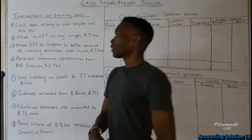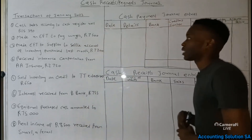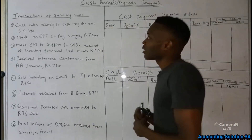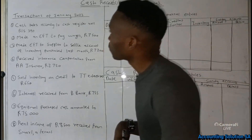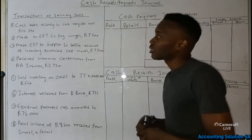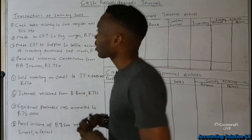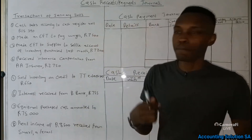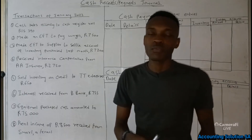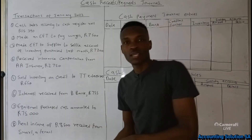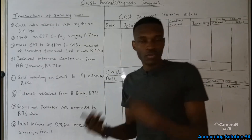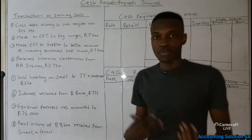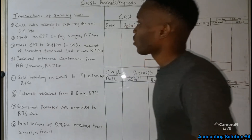Transaction number one: cash sales according to cash register roll amounts to 15,390. Remember, once we receive cash we are going to record it under cash receipts general, and once we pay cash we are going to record it under cash payment general. Simple as that.